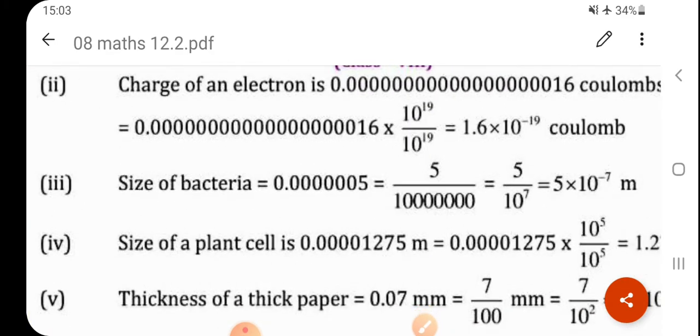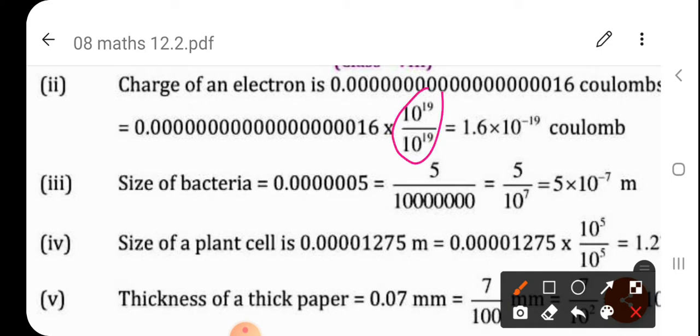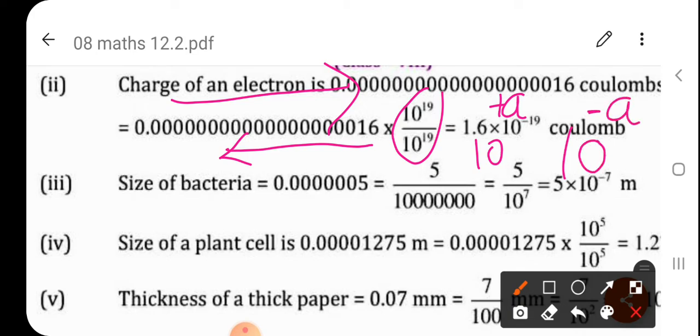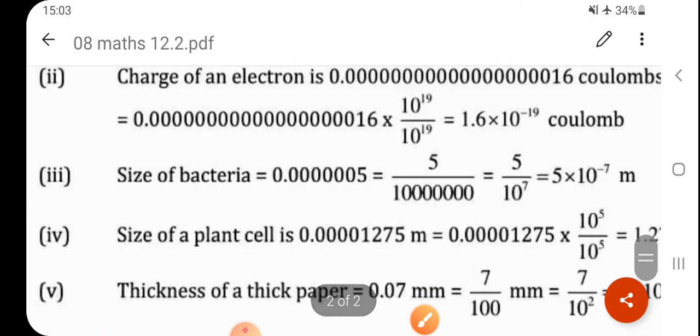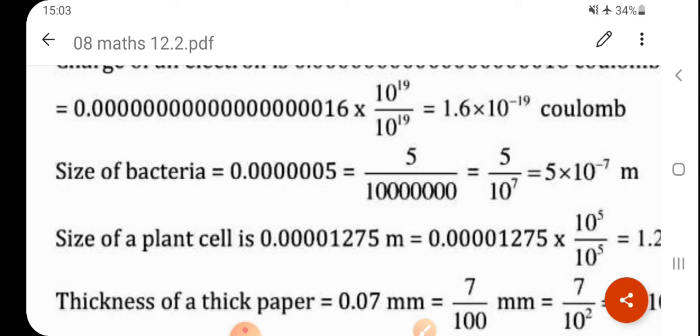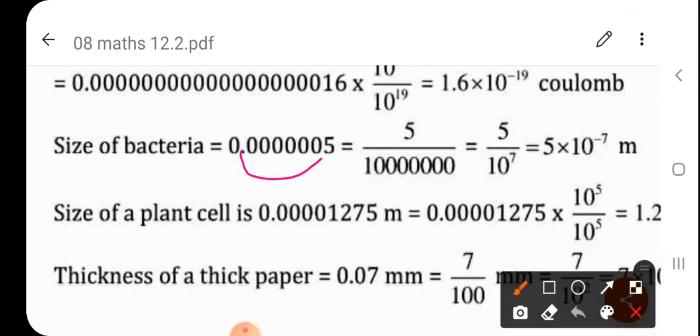Then size of bacteria. You can multiply this 10 raised to 19 also directly you can write. So, if you are going to shift the decimal point from right to left then you have to multiply by 10 raised to plus any power. And from left to right then you have to write 10 raised to minus a. Here this power will be negative. In the next example size of bacteria. You are going to shift this decimal point from here to 5 after. Because you can write 5. There is no meaning to write 5.0. It is 5 only. So, how many decimal places you are going to shift?